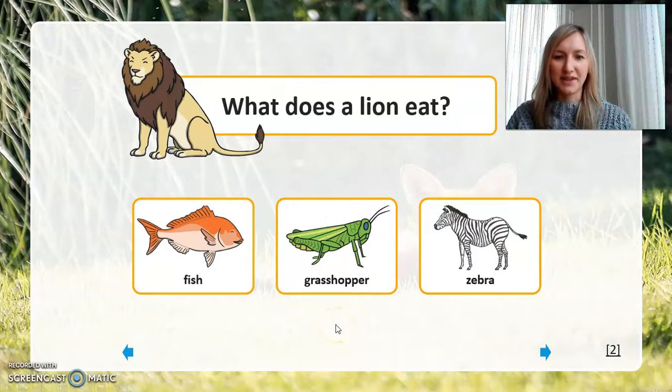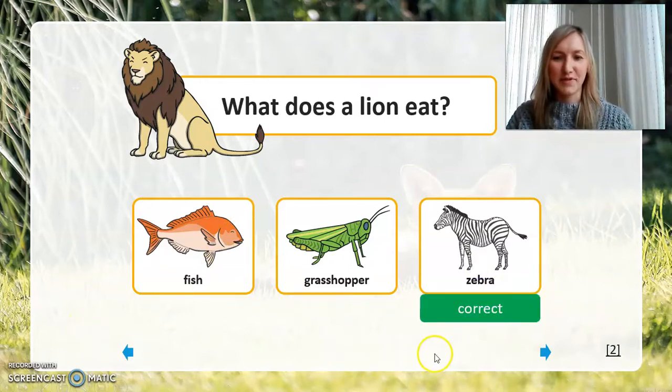The next one we're looking at is what does a lion eat? The choices here, we have fish, grasshopper or zebra. What do you think? Yes, you're correct. This time it's going to be a zebra.